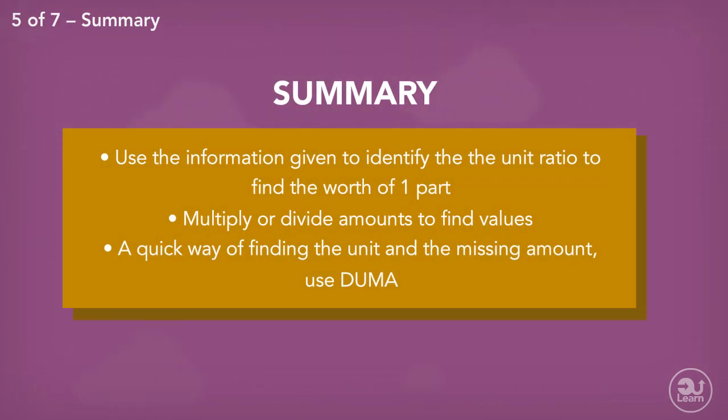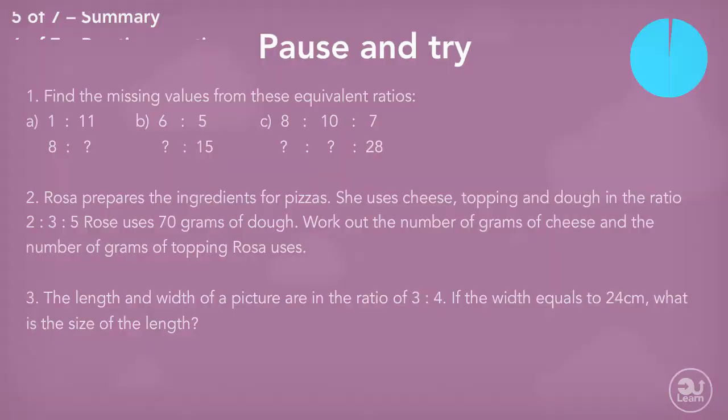So to summarize, when using ratios to solve problems, using what you know about one part of the ratio can help identify an answer. This can be represented as a unit ratio. Multiply or divide the value in the ratio to get the amount you're looking for. If not a unit ratio, find how much one part represents, then multiply that amount by how many parts the item you're trying to find out represents. And lastly, feel free to use Duma where necessary.